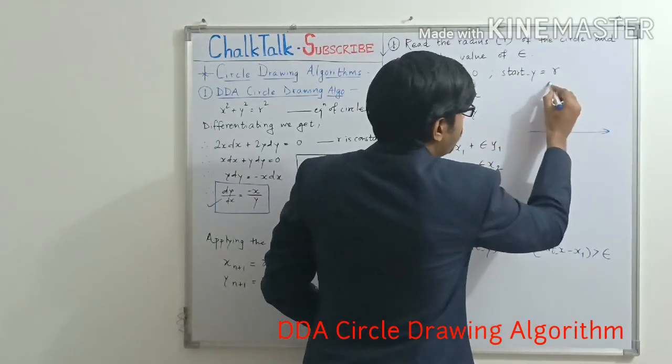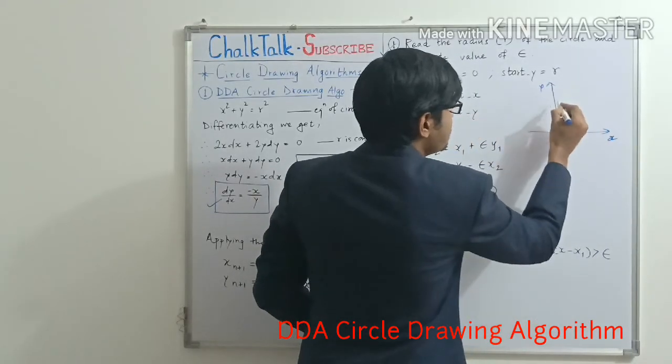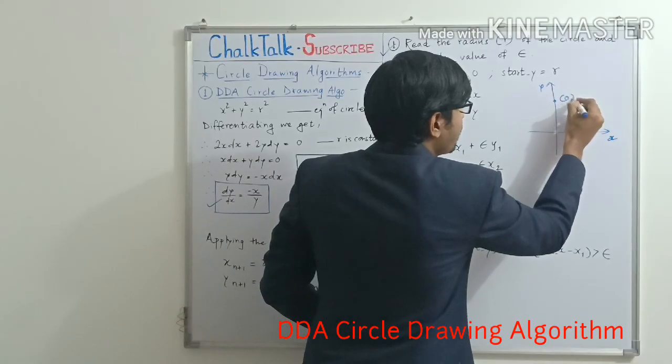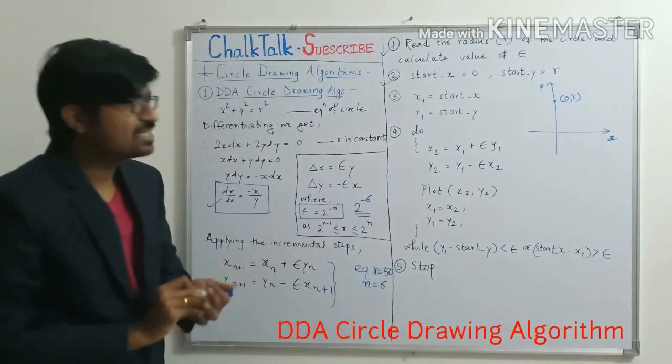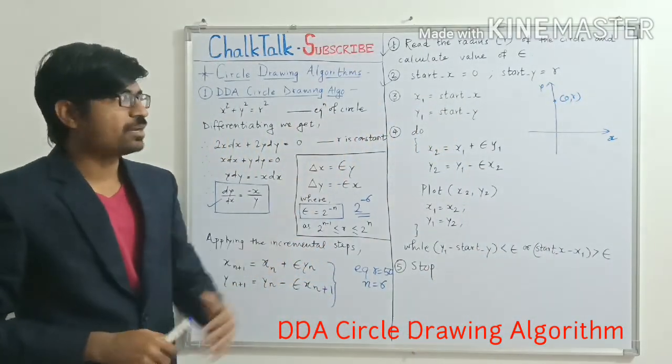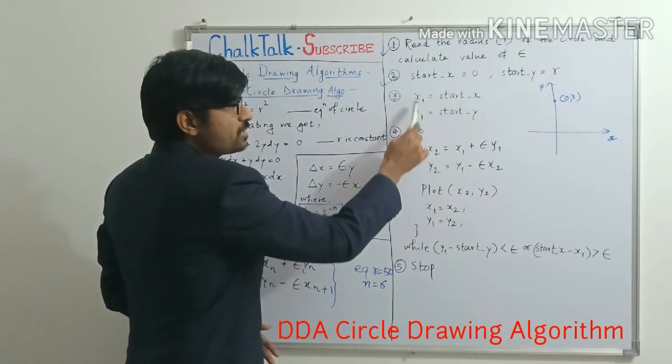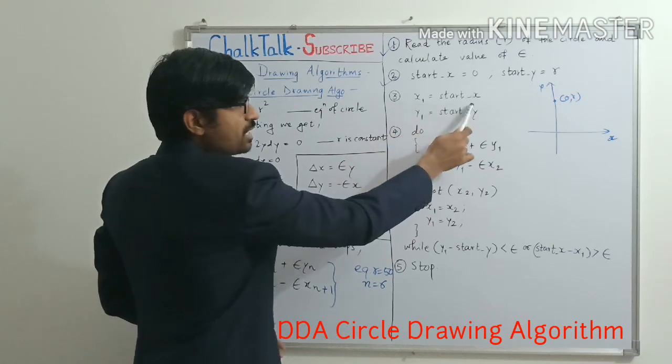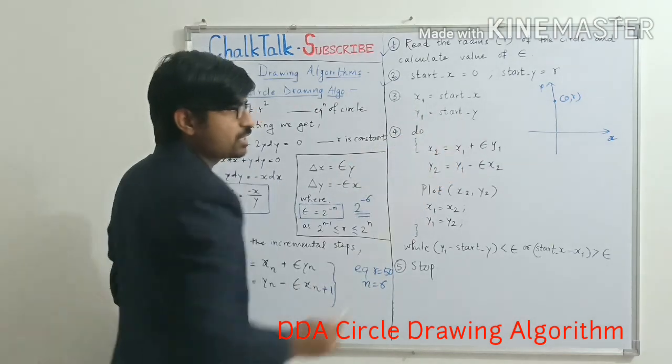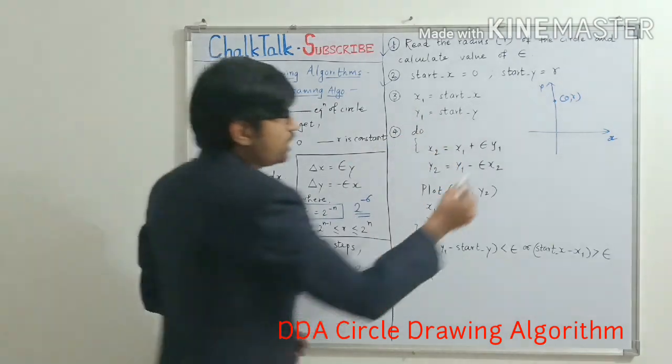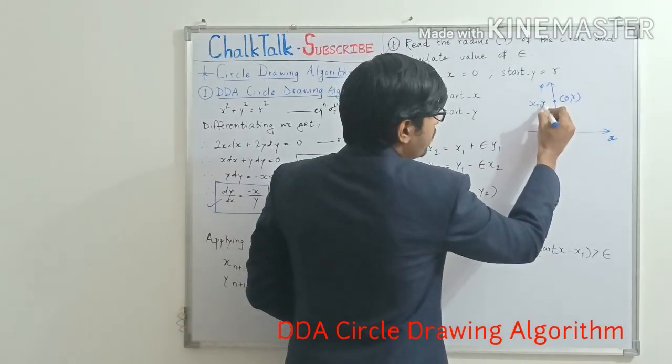For example, in the plane of x and y axis, my 0,r point will lie here. Because x is 0 and y is r and r is coming from the user. Now I am just substituting the same variables to the new variables that is x1 and y1. So x1 is my now start_x and y1 is my now start_y. So this point is nothing but x1, y1.